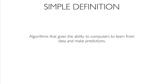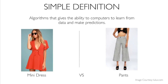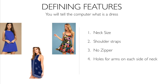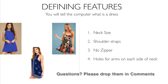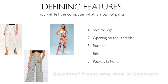Machine learning refers to algorithms that give computers the ability to learn from data and make predictions. Going back to our example, let's say an app takes a picture — how will the AI tell if it's looking at a mini dress versus a pair of pants? In machine learning, when pictures are uploaded, you define the features. For a dress, you tell the computer it has a certain neckline, shoulder straps, no zippers, and arm holes on each side.